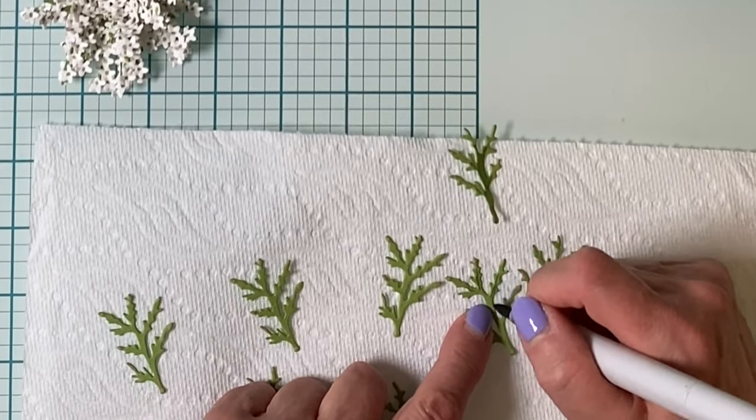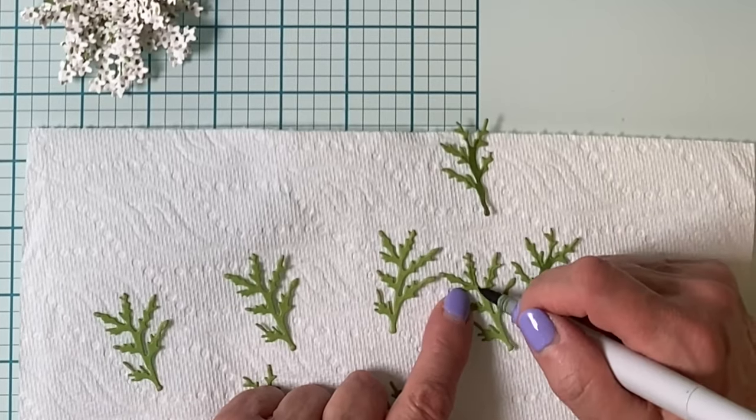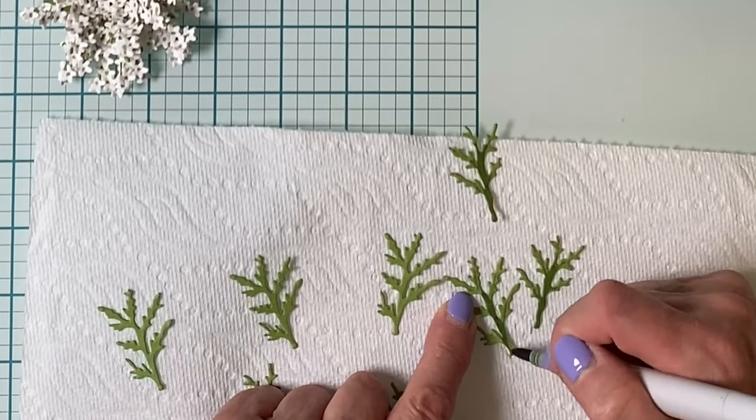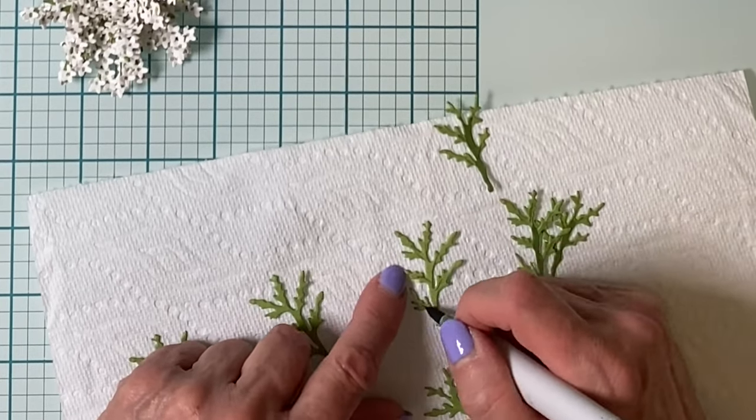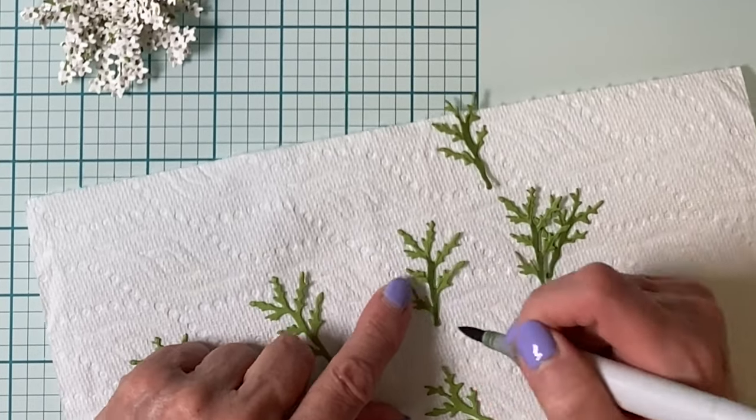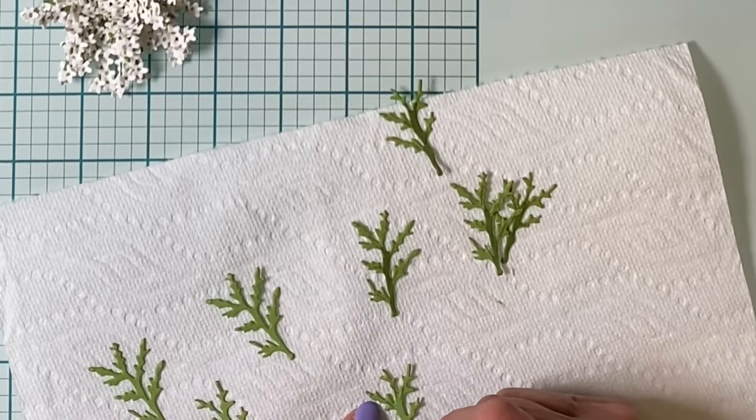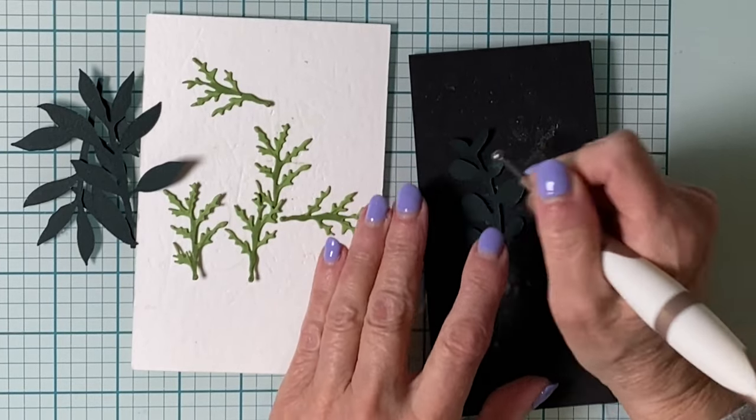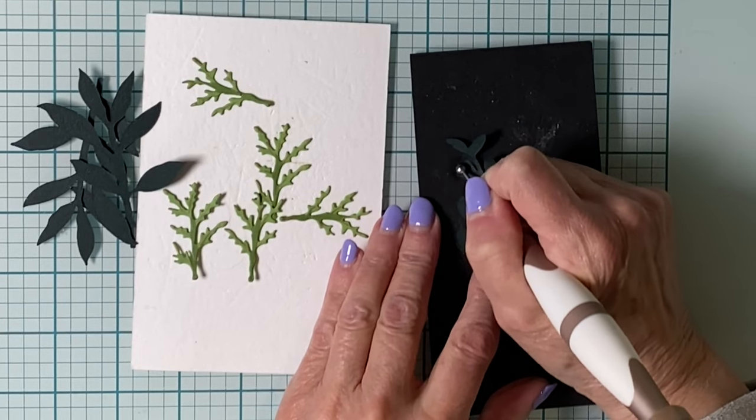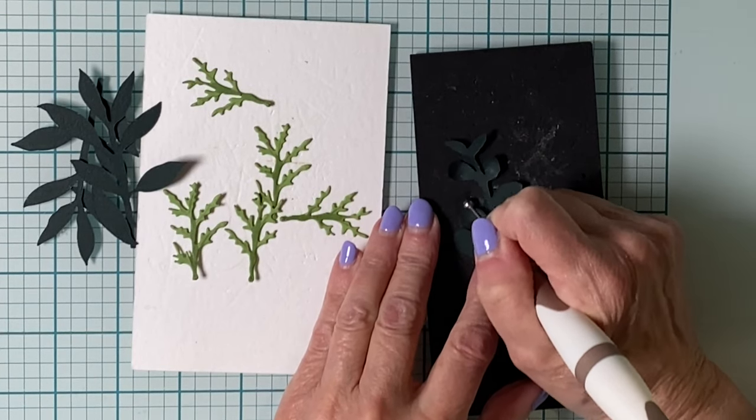Sticking with that same Copic marker, the YG63 that was used to put a dot of green in the center of all of the flowers, I'm just going to add some details to these leaves and darken up the central stem. I'll also be incorporating three leafy stems from the Victorian Foliage die set.